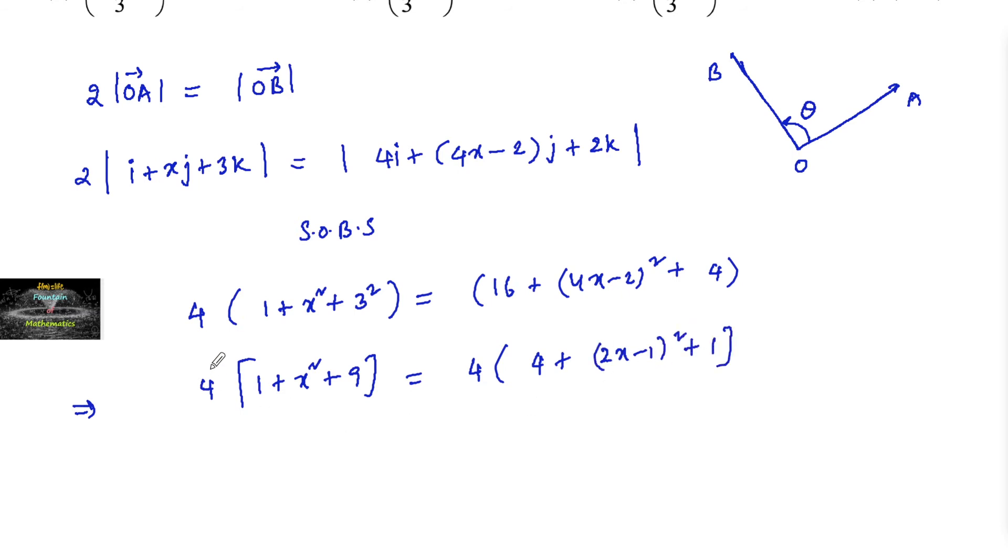We can cancel 4 on both sides and x squared plus 10 is equal to 4 plus 4x squared minus 4x plus 1 plus 1. Which implies 4x squared minus x squared, that comes 3x squared minus 4x, and 6 minus 10 is minus 4 equals 0.